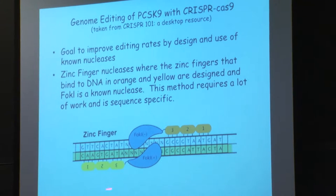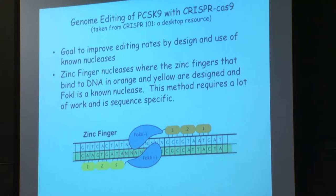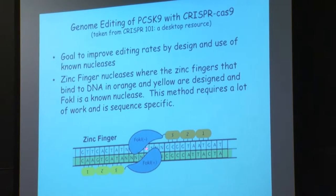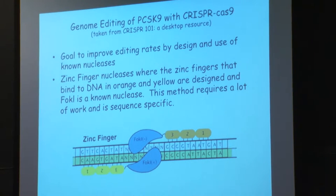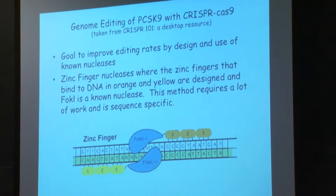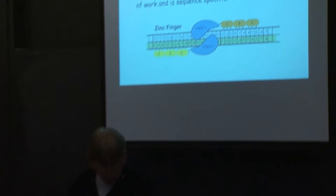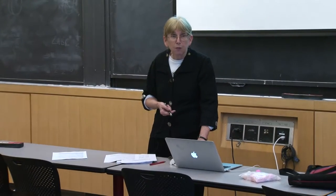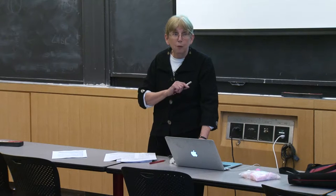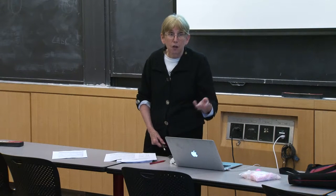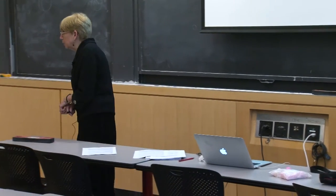Once they have these binders, they attach a nuclease — FokI is a nuclease that cleaves a phosphodiester bond of the nucleic acid. You cleave one strand and on the other strand you have a double-stranded break. These enzymes give you blunt-ended cleavage with no overhangs. Carl Pabo at MIT was one of the people who got this technology off the ground, but it's hard.